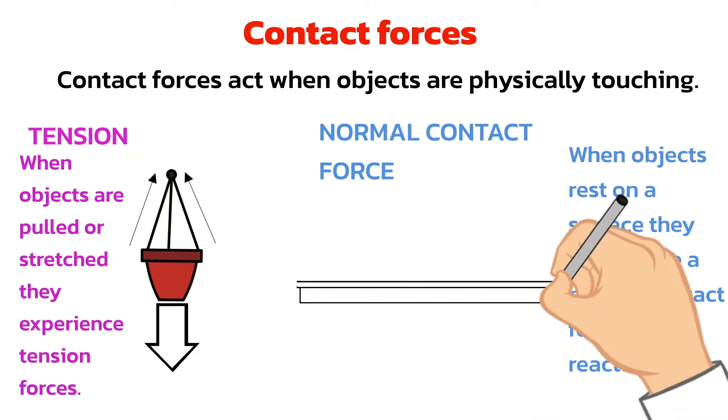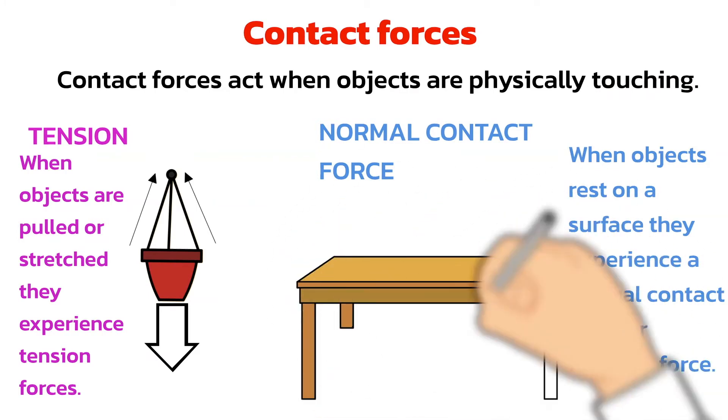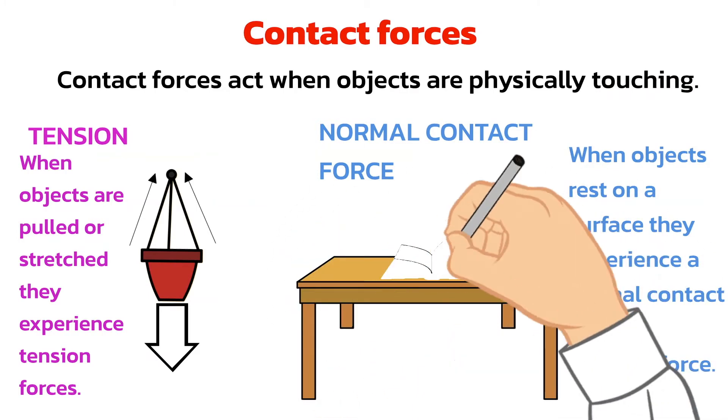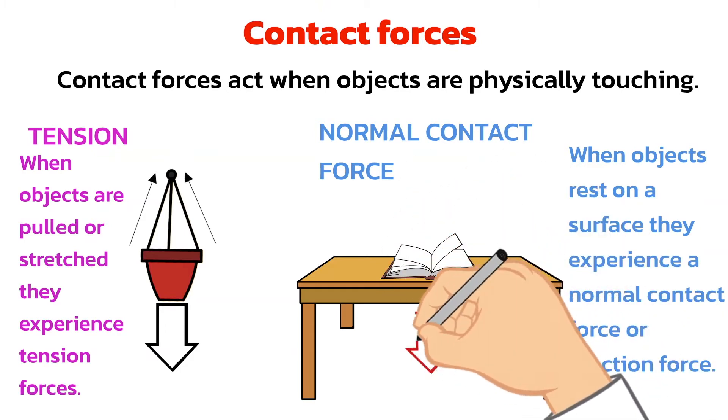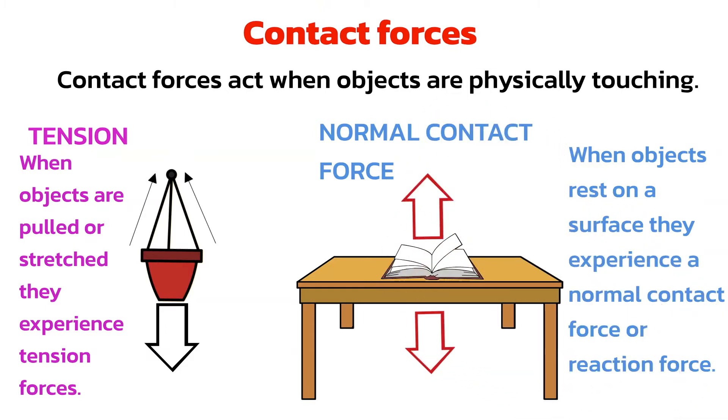When objects rest on a surface, they experience a normal contact force or reaction force. In this example, the weight of the book acts downwards and the table provides an upward force, called the normal contact force, to balance out the weight.